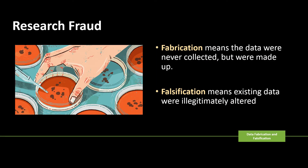Research fraud refers to cases where data were either fabricated or falsified to provide false support for the researcher's hypothesis. Fabrication means the data were never collected but were made up. Falsification means existing data were illegitimately altered, including manipulating research materials, images, data, equipment, or processes, as well as changing or omitting data or results so that the research is not accurately represented. For example, a person might falsify data to make it fit with the desired end result of a study.